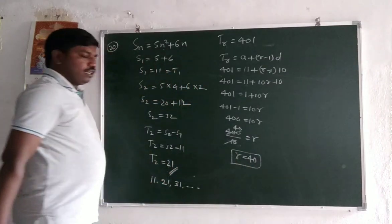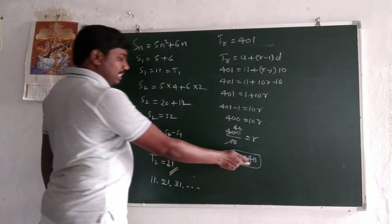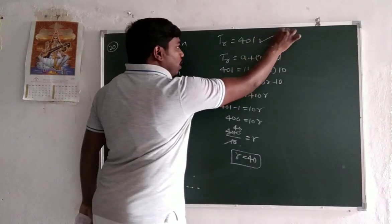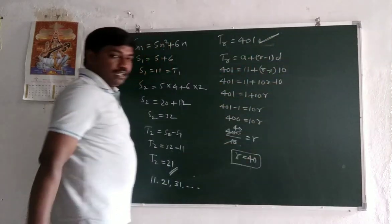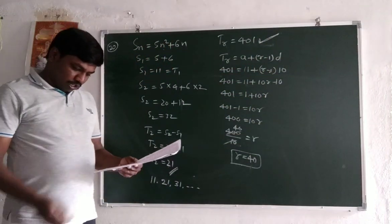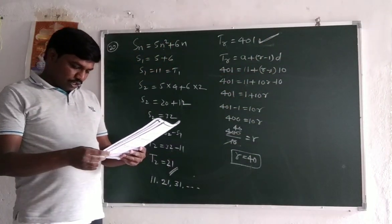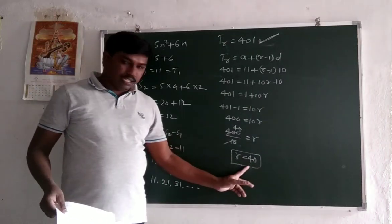So what we need to calculate? The 40th term is 401. So T40 is 401. So 40 is the answer, option 2 or 3.